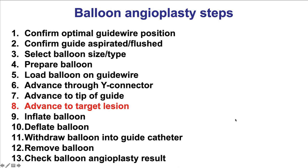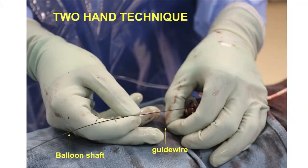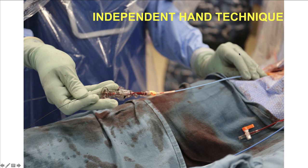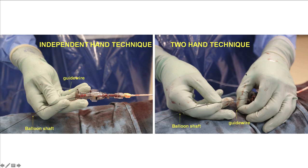Step number eight is to advance the balloon to the target lesion. There are two ways to do this. One is the two-hand technique, in which one hand stabilizes the guide wire and the other hand — typically the right hand — pushes the balloon shaft into the vessel. The other option is the independent hand technique, in which the right hand holds both the Tuohy as well as the balloon and guide wire, allowing the operator to both advance and withdraw the balloon with a single hand. This technique allows the left hand to be on the guide catheter to enhance support. The independent hand technique is strongly recommended as it provides much more flexibility and strength in delivering equipment, especially in hard-to-deliver situations.